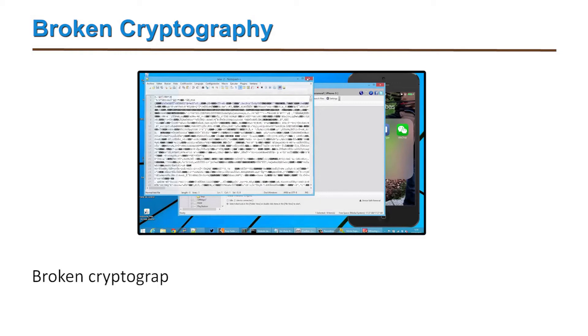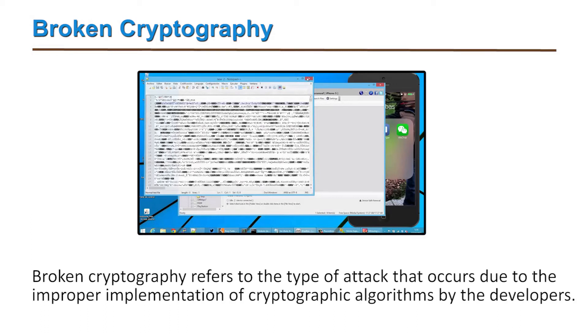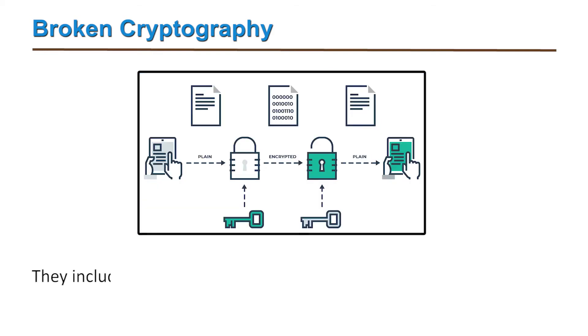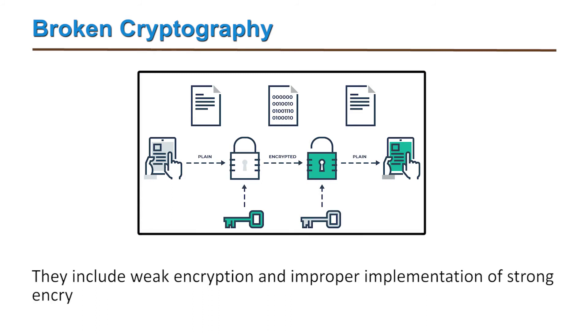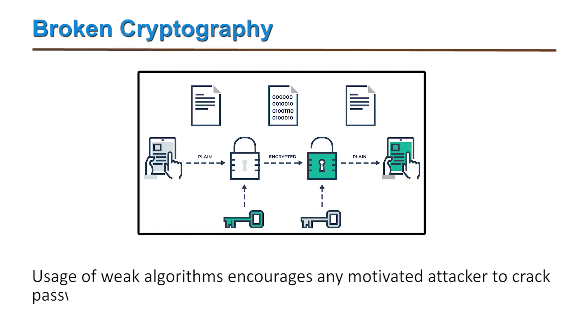The sixth threat is broken cryptography. Broken cryptography refers to attacks that occur due to improper implementation of cryptographic algorithms by developers. This includes weak encryption and improper implementation of strong encryption. The use of weak algorithms encourages motivated attackers to crack passwords and gain access to systems. The seventh threat is improper session handling. Most systems handle session-generated tokens for transactions for security purposes, and a token is a unique pattern used by the user to define their identity while dealing with application sessions.